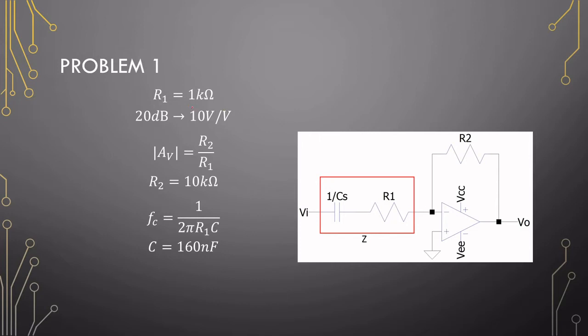The input impedance should be 1 kΩ, so we make this resistor 1 kΩ. We can calculate the capacitor with this and it's 160 nF. Since the passband gain should be 10 volts per volt, R2 can just be 10 kΩ. And that is the design.